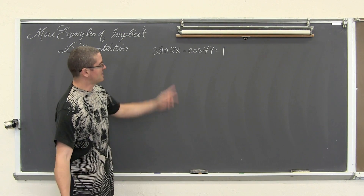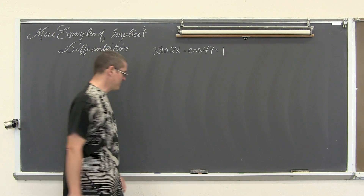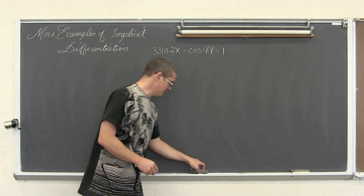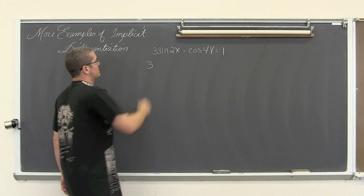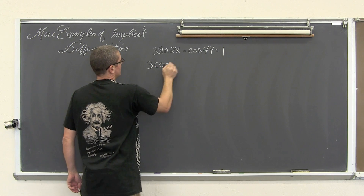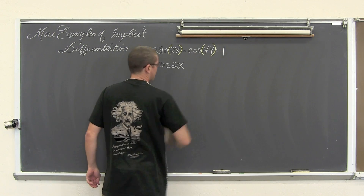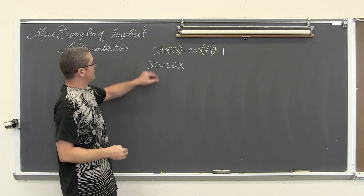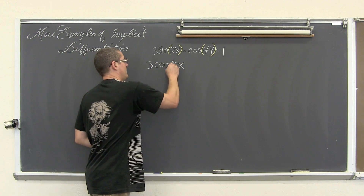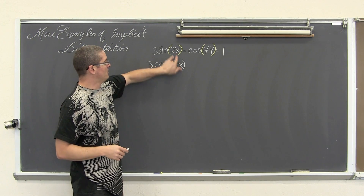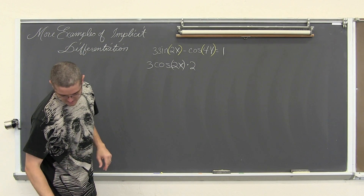For the next example: 3 sin(2x) minus cos(4y) equals 1. The derivative of sine is cosine, so we get 3 times cosine of 2x. The inside function is 2x, so its derivative is 2. So 3 cosine(2x) times 2. I like to highlight angle measurements with parentheses to make sure we understand the sign of the multiplication.